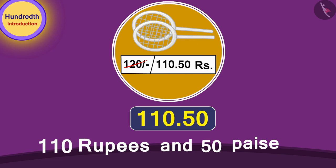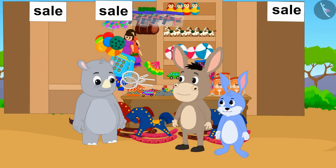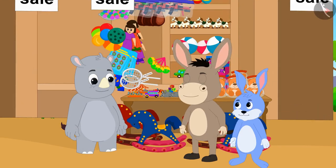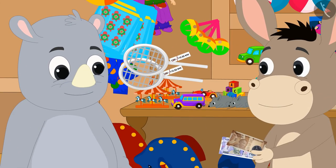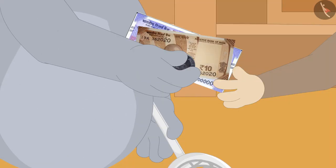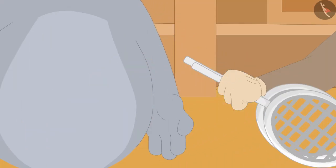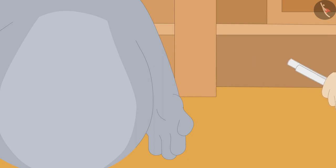Bunny explained to Bhola, and Bhola quickly understood. Bhola bought the badminton racket by giving 110 rupees and 50 paise to Gaggoo.